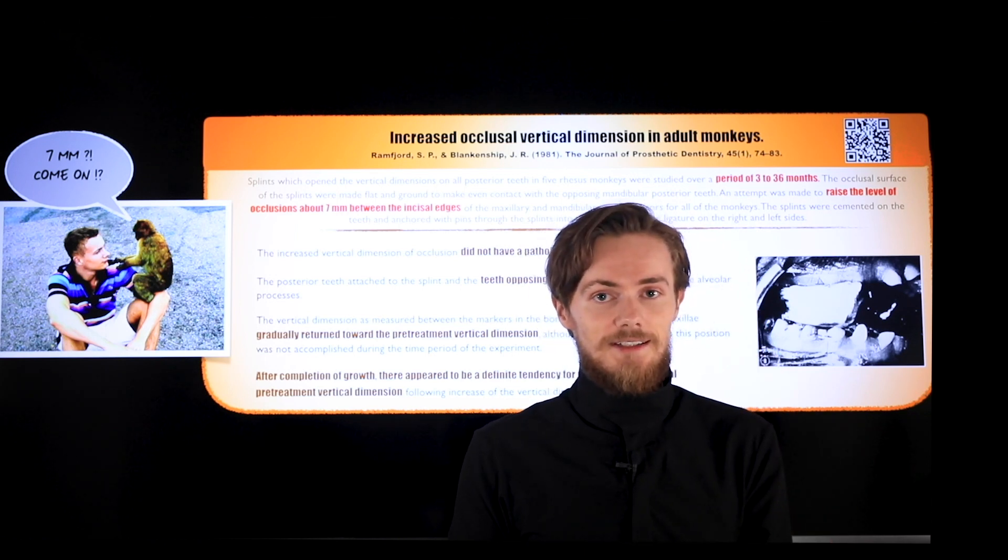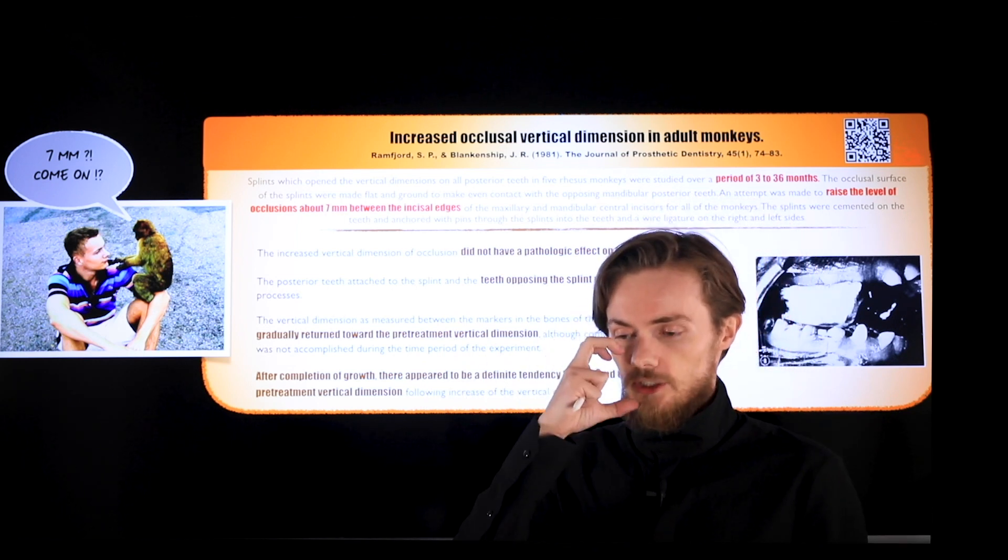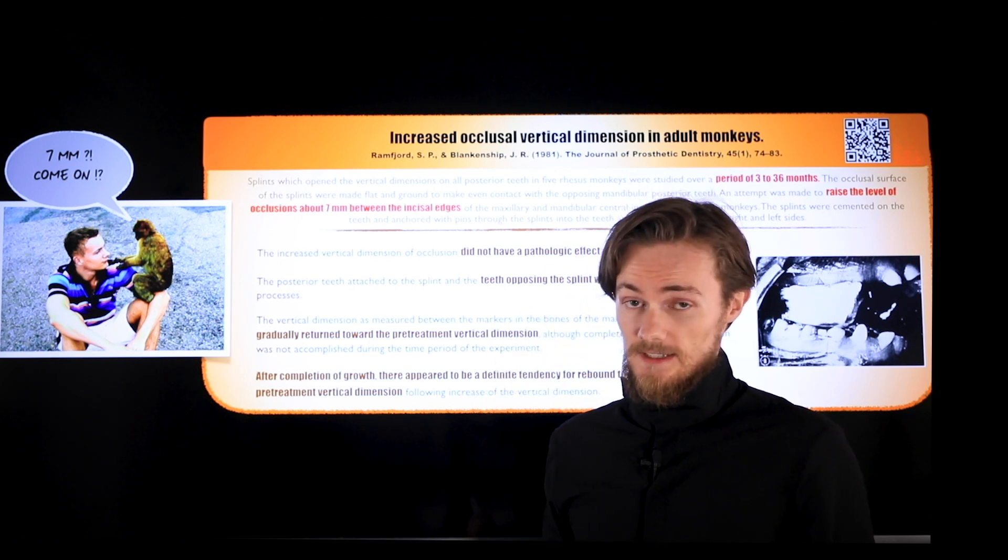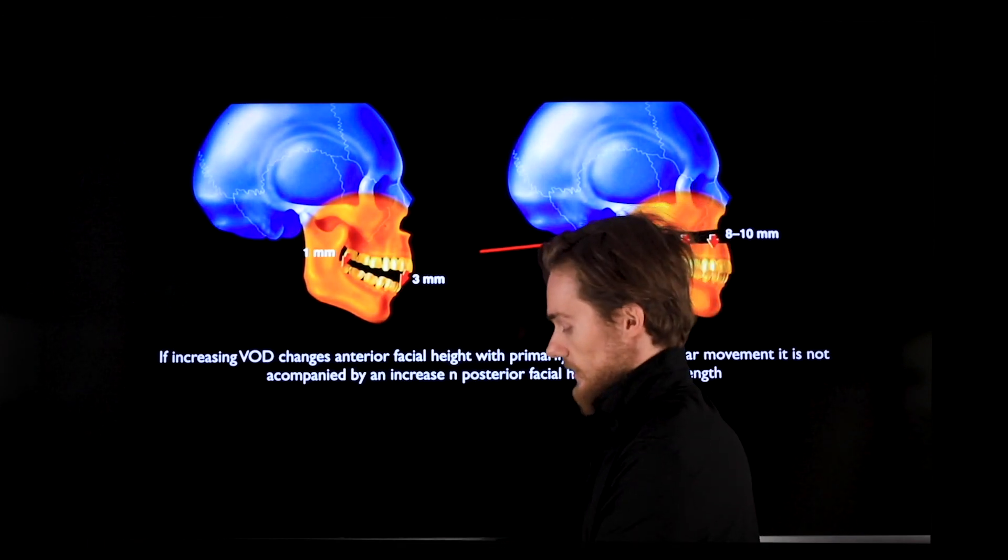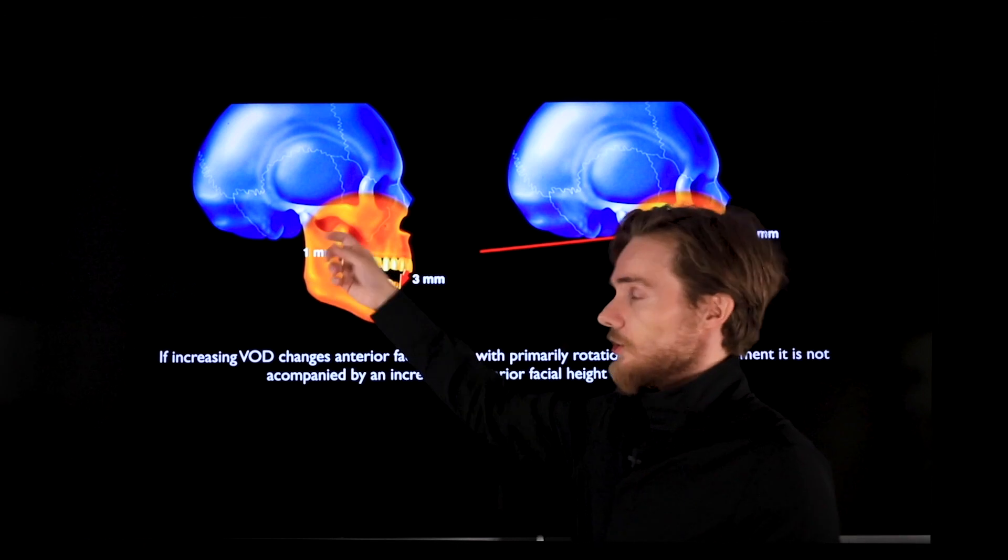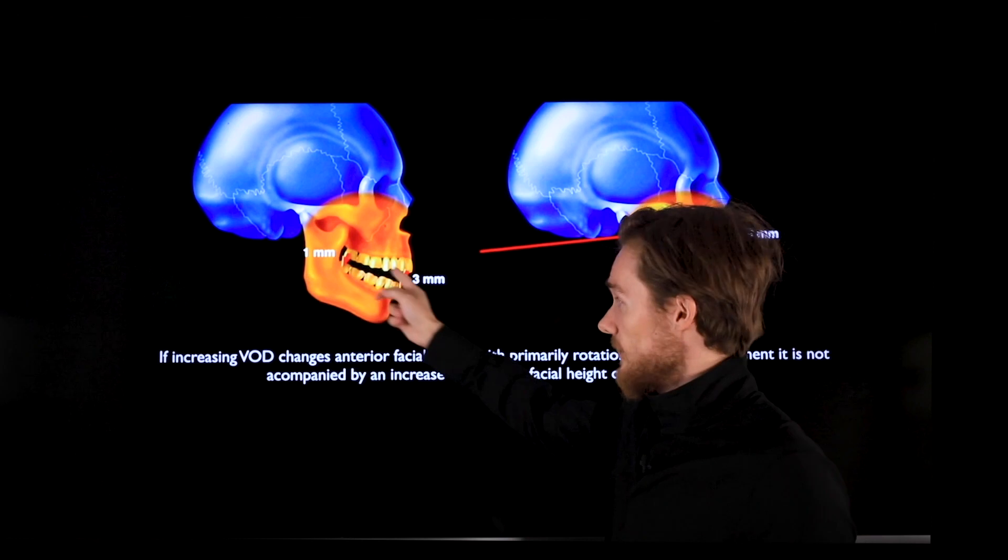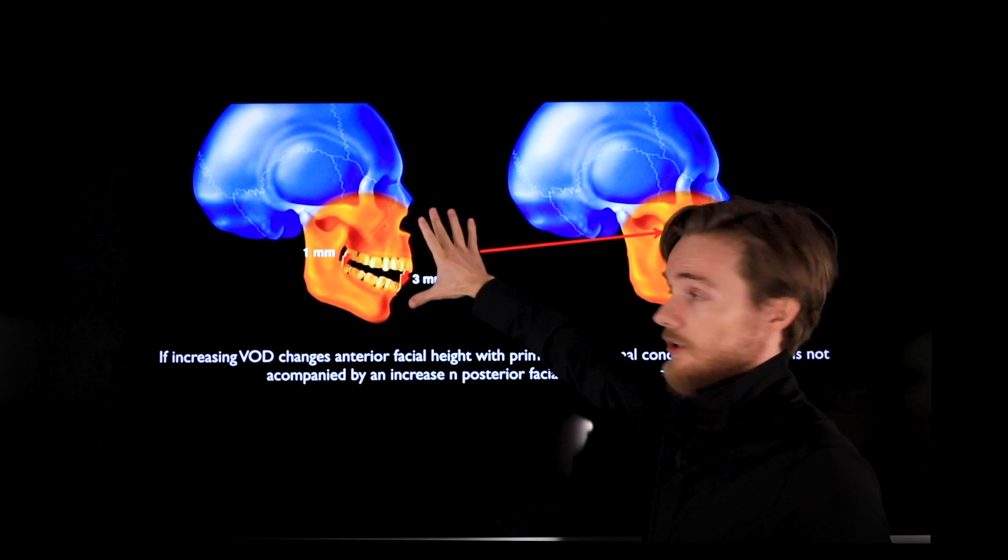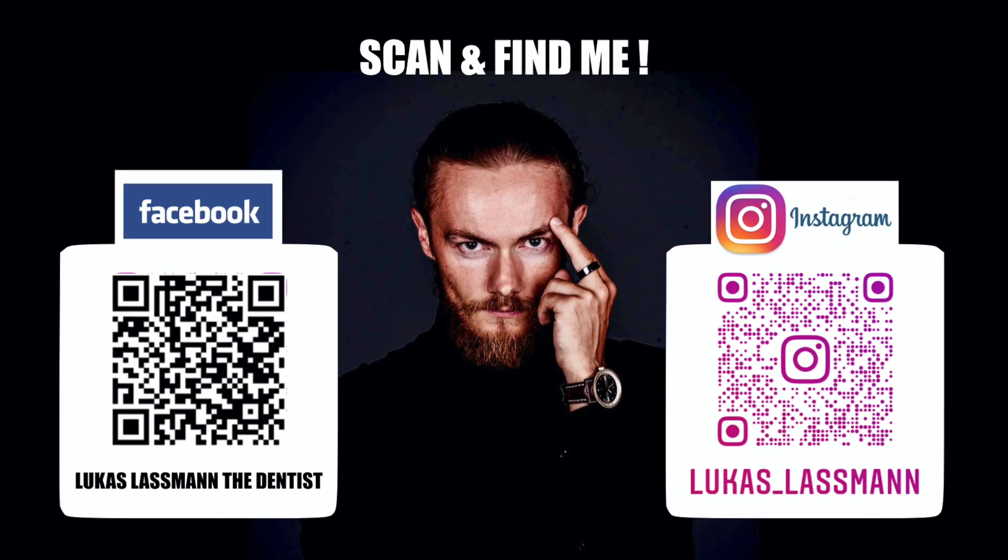So what they did: they put seven millimeter splints, seven millimeter high splints, for this little head. It is huge when you look at this picture. So it's not surprising that it caused stretching of the muscle and intrusion of the teeth. When you increase that much that you will not only increase the height, the frontal height of your face, but also the posterior height of your face, then maybe you will increase the length of the muscles.